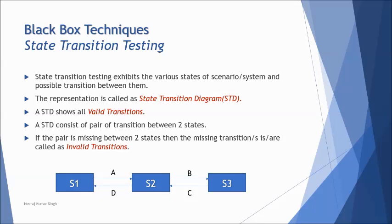STD generally consists of pair of transitions between any two states, and if you find this pair missing between two states, then the missing transitions are called as invalid transitions.